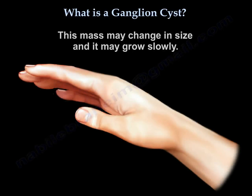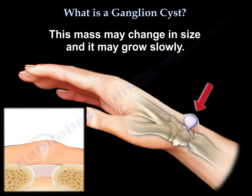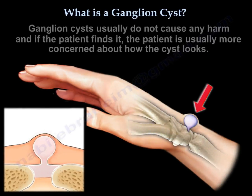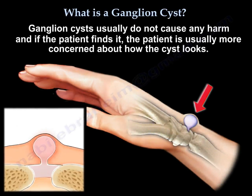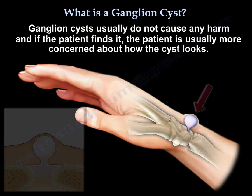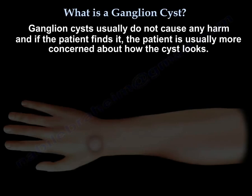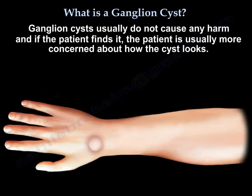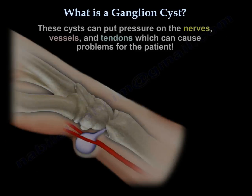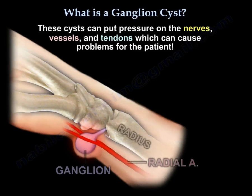This mass may change in size and it may grow slowly. A ganglion cyst usually does not cause any harm, and if the patient finds it, the patient is usually more concerned about how the cyst looks. However, this cyst can put pressure on the nerves, the vessels, and the tendons, and it can create a problem for the patient.